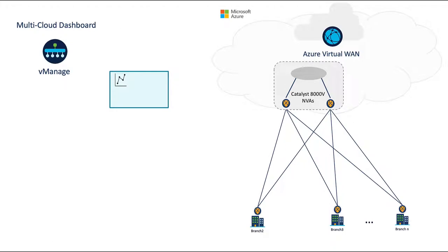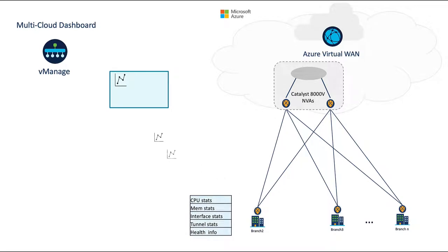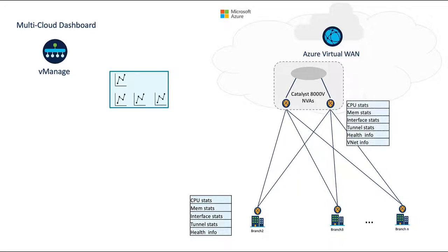Our multi-cloud dashboard and telemetry facilitate day-one operations and troubleshooting. Our routers continuously send health information to vManage, including CPU, memory, interface, and tunnel stats, as well as general device health. This includes all hardware branch routers as well as our cloud gateways, which also send information about their connected VNets. This data can then be aggregated and further analyzed to assist with baselining, trend analysis, and troubleshooting.